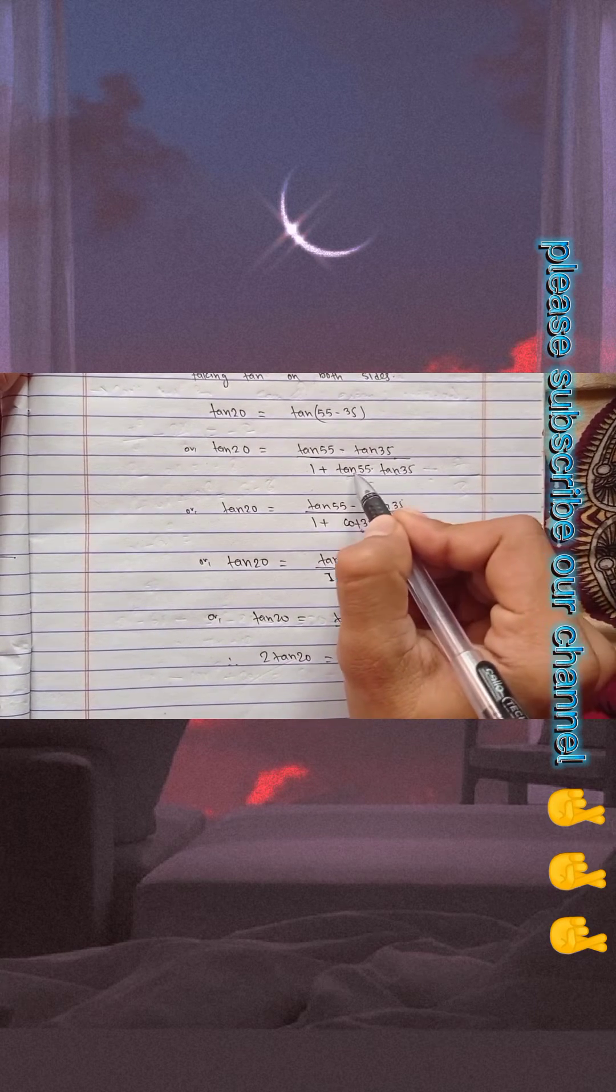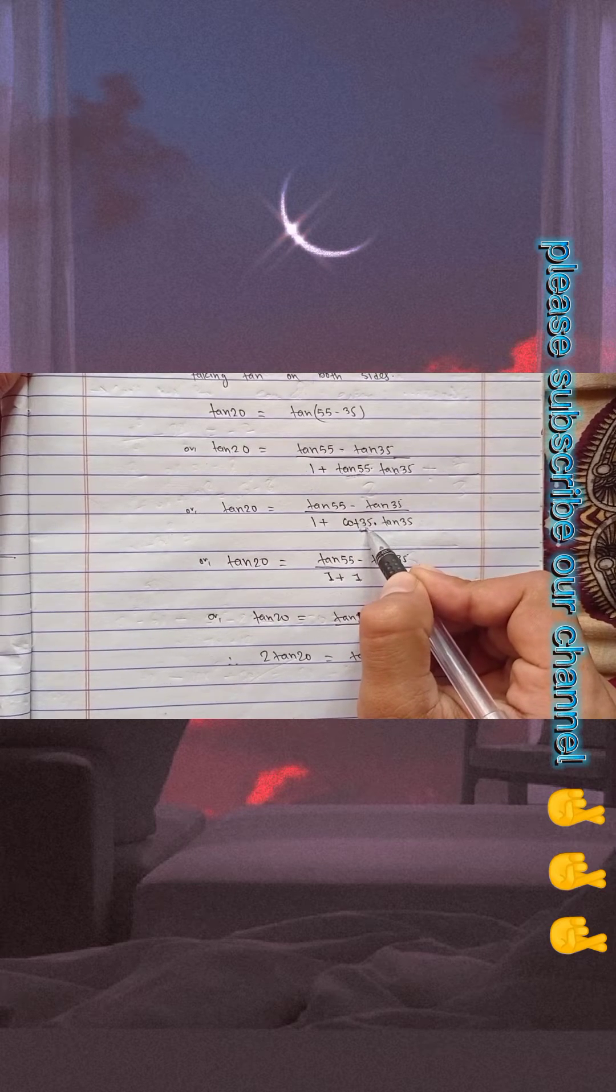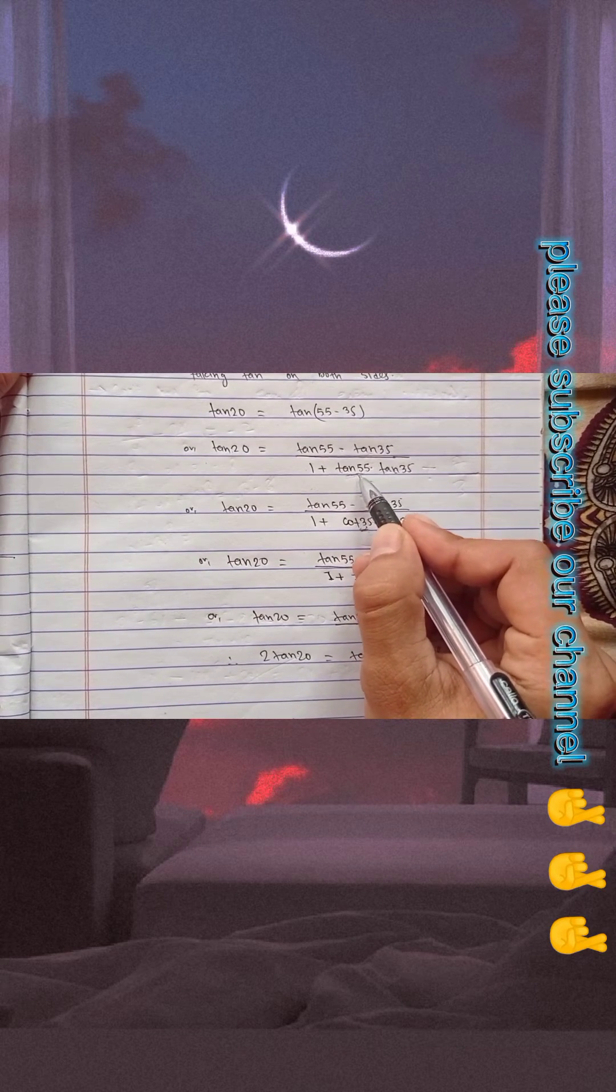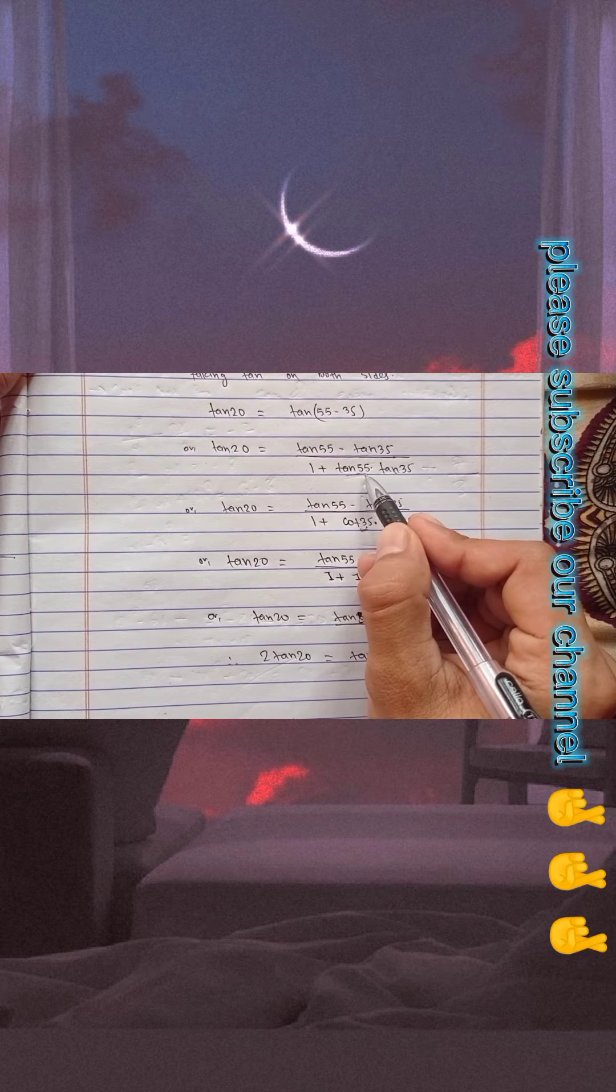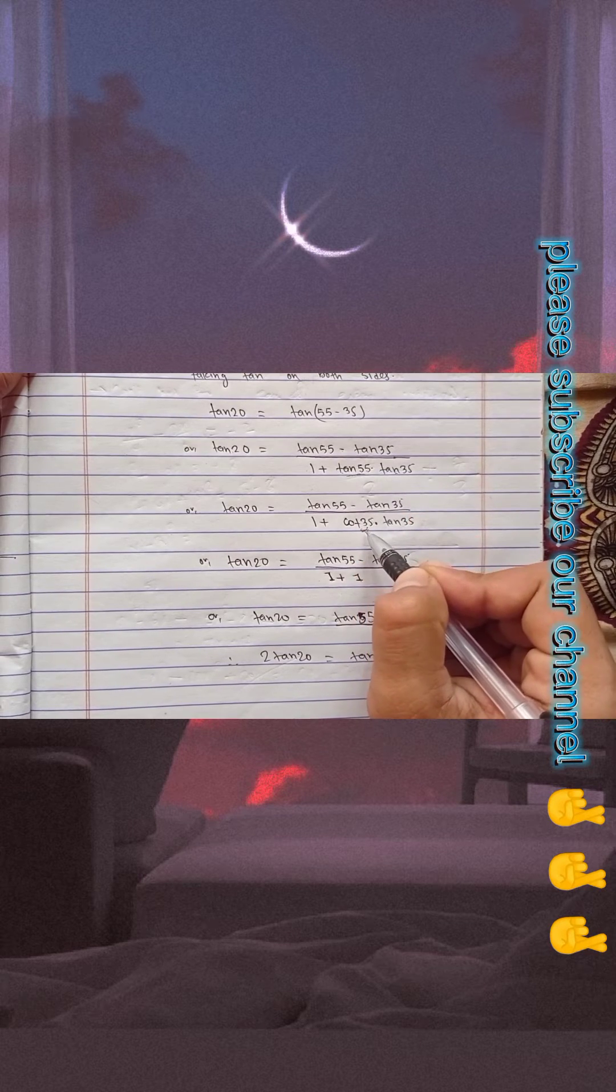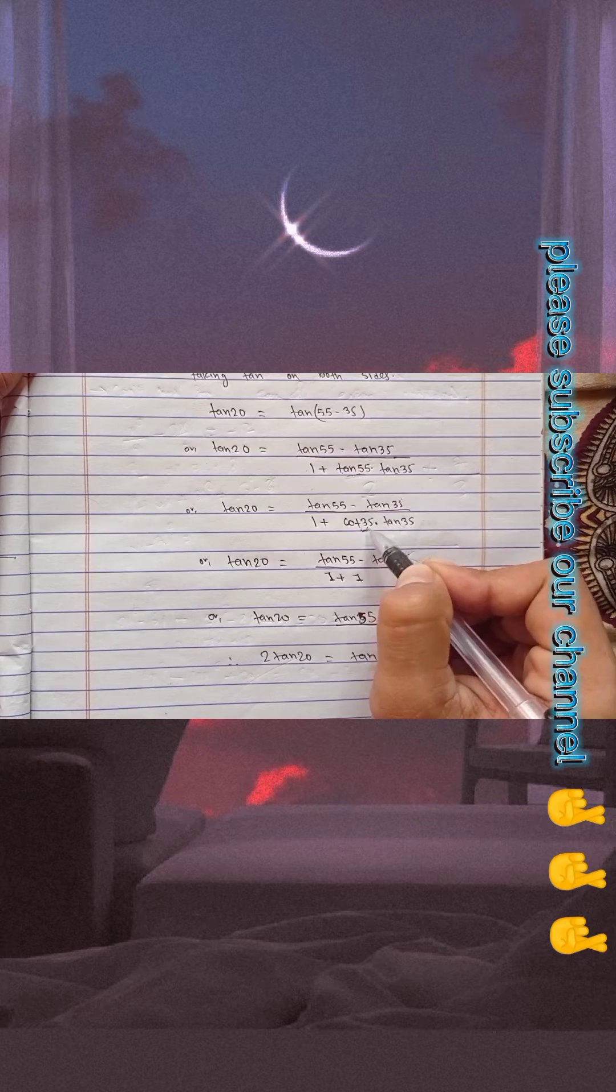In the next step, you can see here tana minus tanb, and I have changed tan55° into cot35° by using the cast rule. Tan55° can be written as tan(90° - 35°), and tan(90° - 35°) is cot35°, so I have written cot35° in place of tan55°.